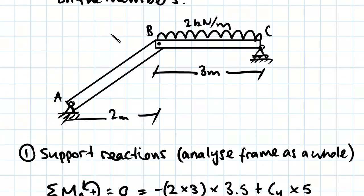We're going to start off by analyzing this frame as a whole. The rationale behind frame analysis is you start off by looking at the frame as a whole to work out your support reactions, and then what you do is you break it up into its individual members. You can see that this frame has two members.